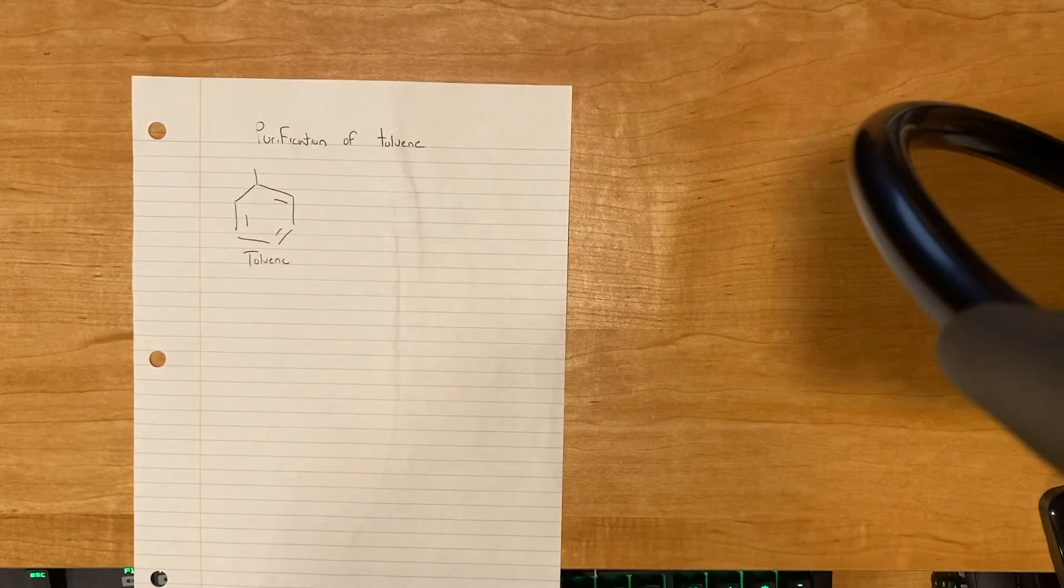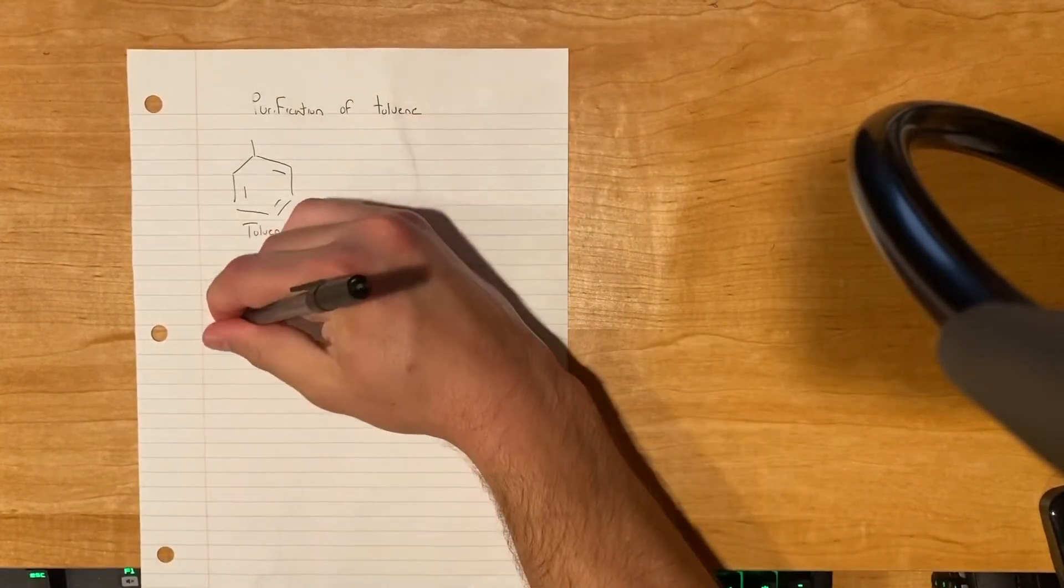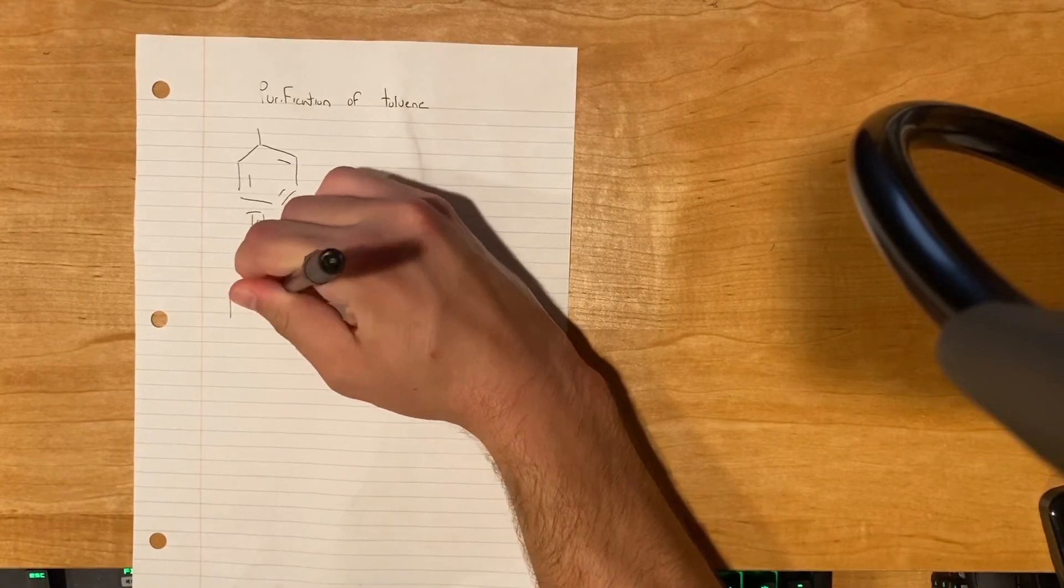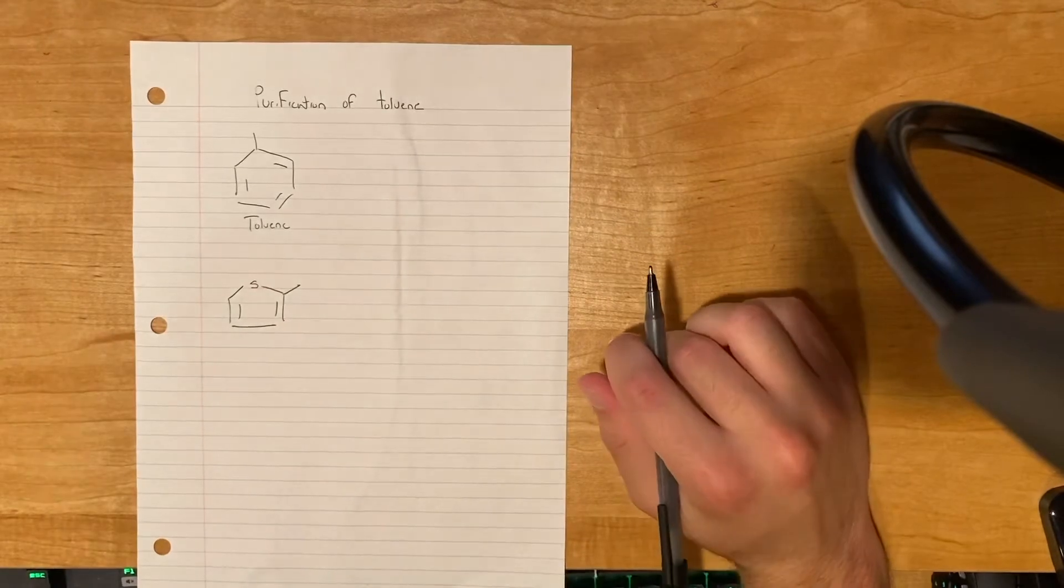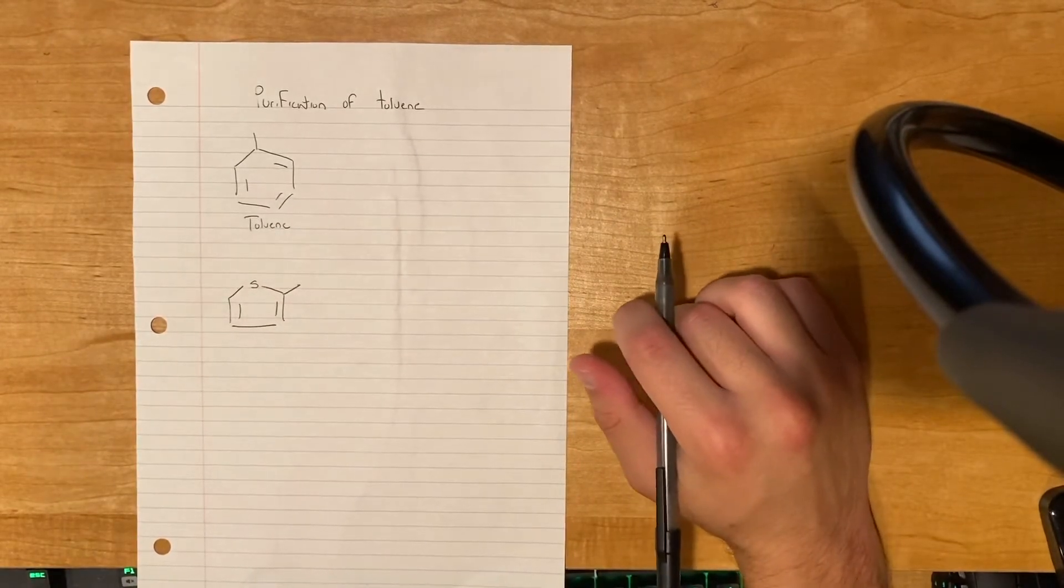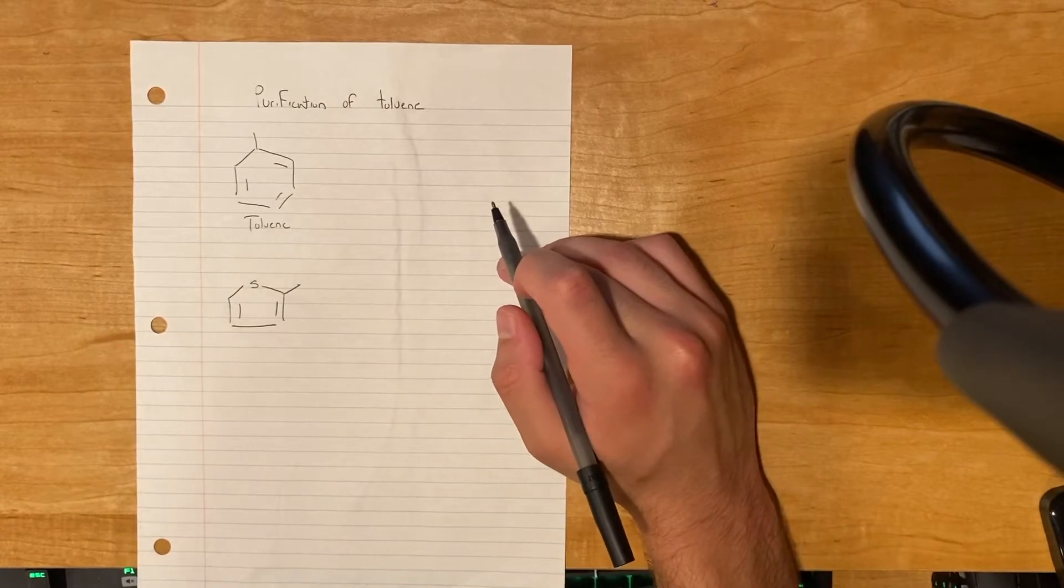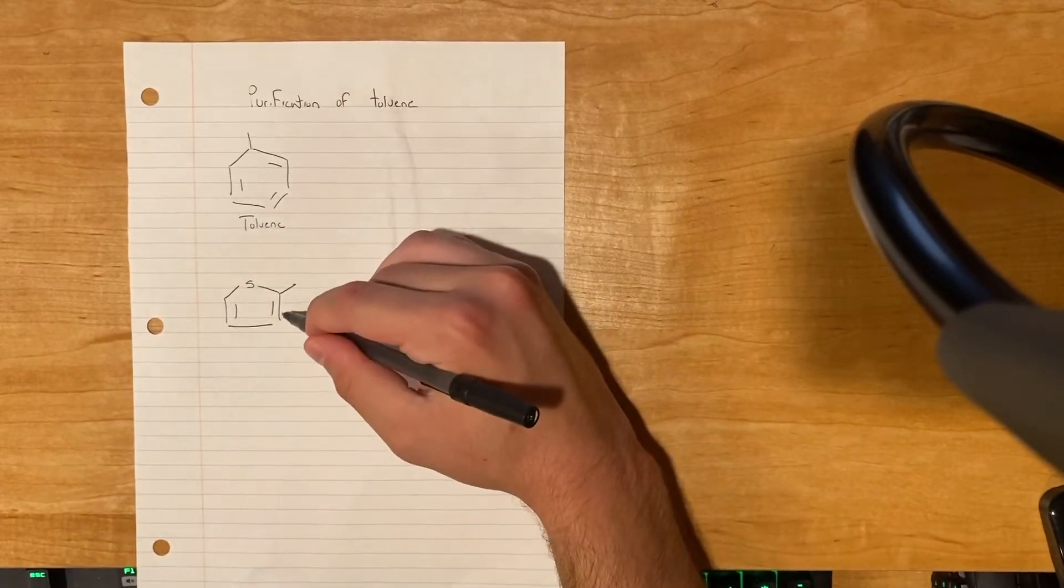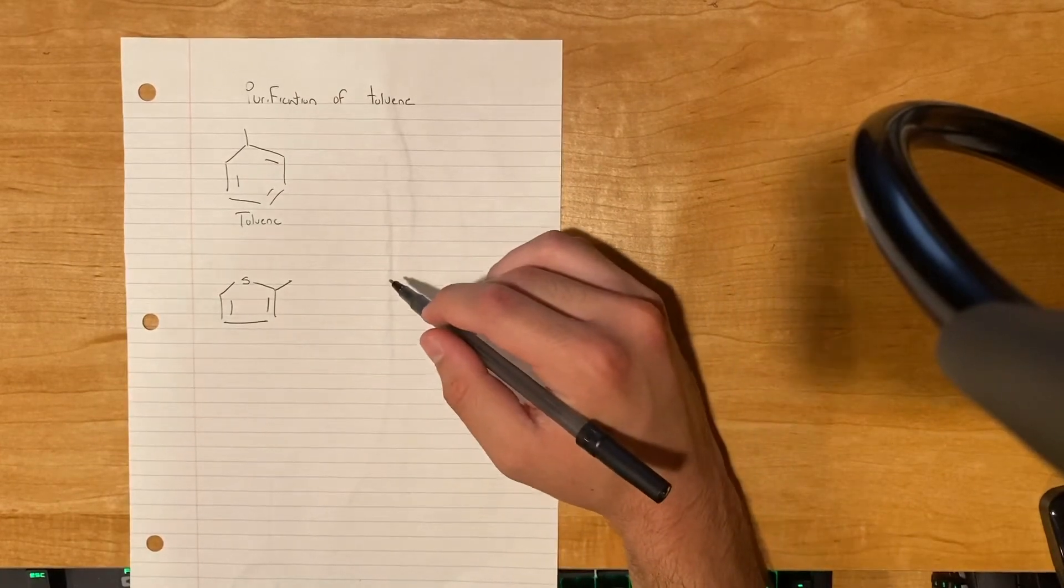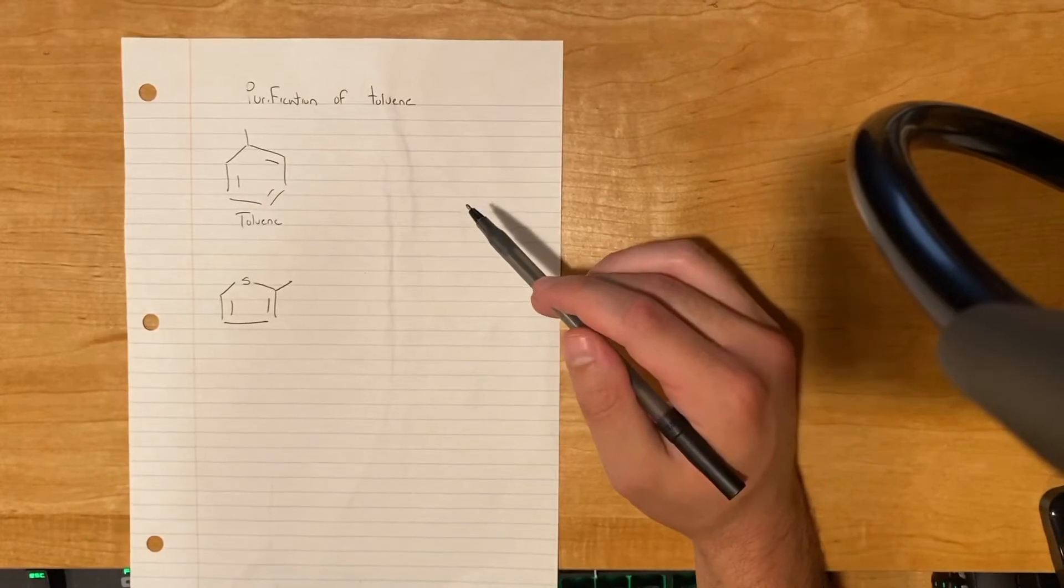Toluene needs to be purified because it contains an impurity called methylthiophene, as seen here. Methylthiophene and toluene are both aromatic compounds, but when toluene undergoes electrophilic aromatic substitution reactions, if methylthiophene is present, it can polymerize and cause your end product that you're trying to get to become contaminated.